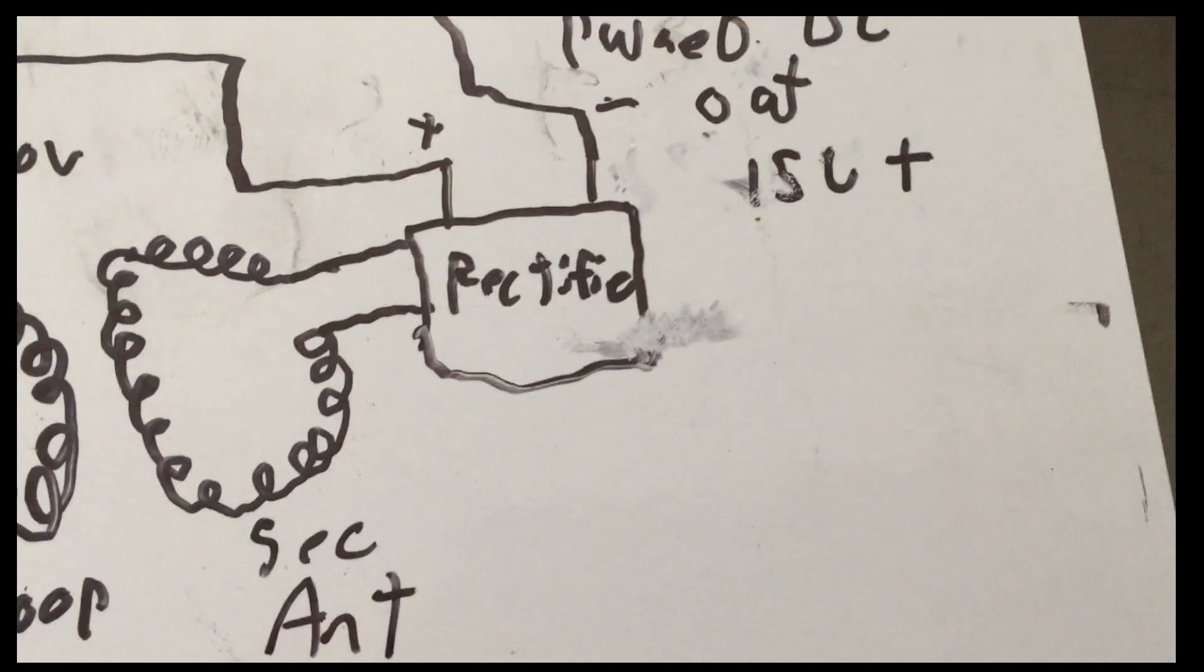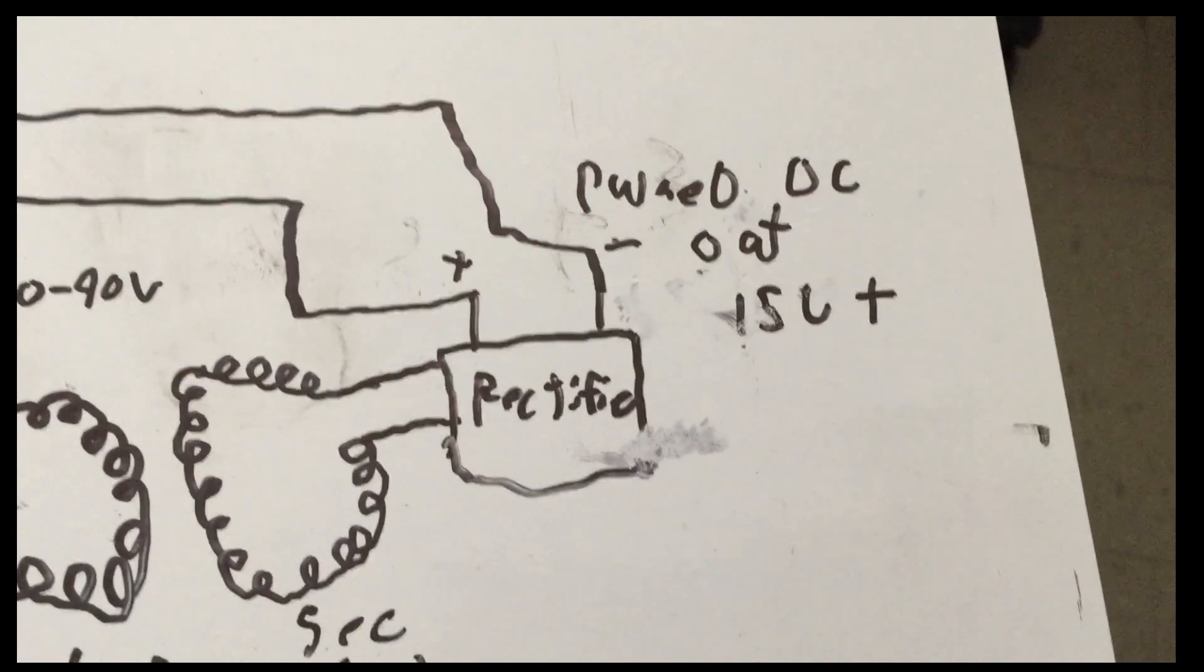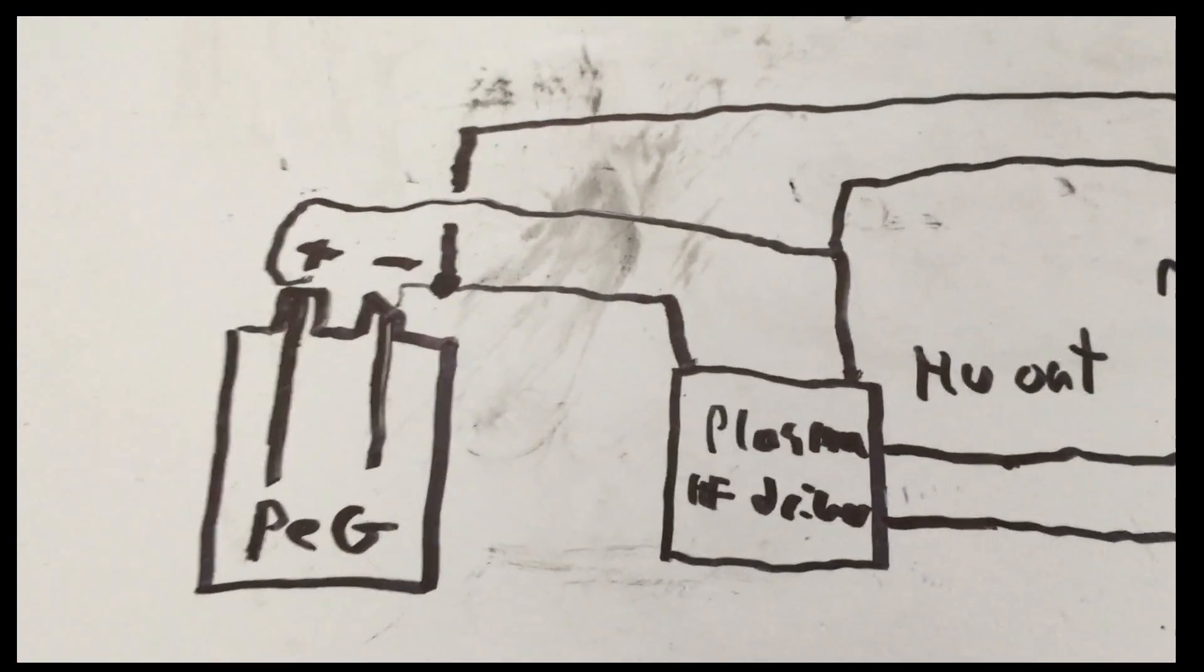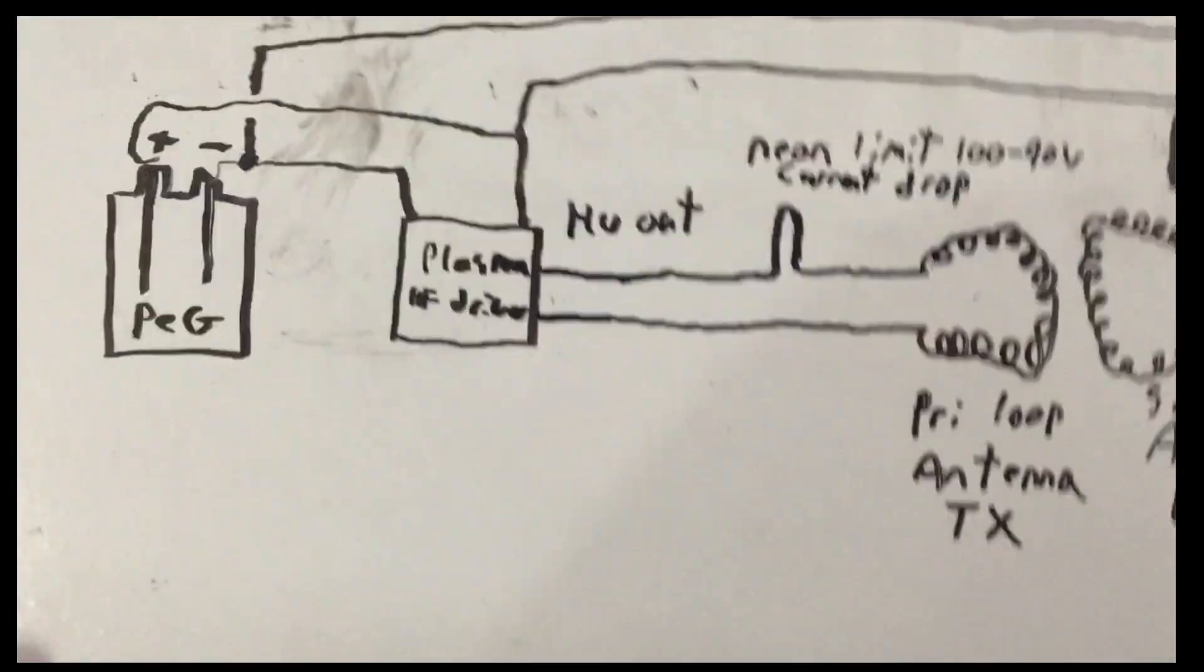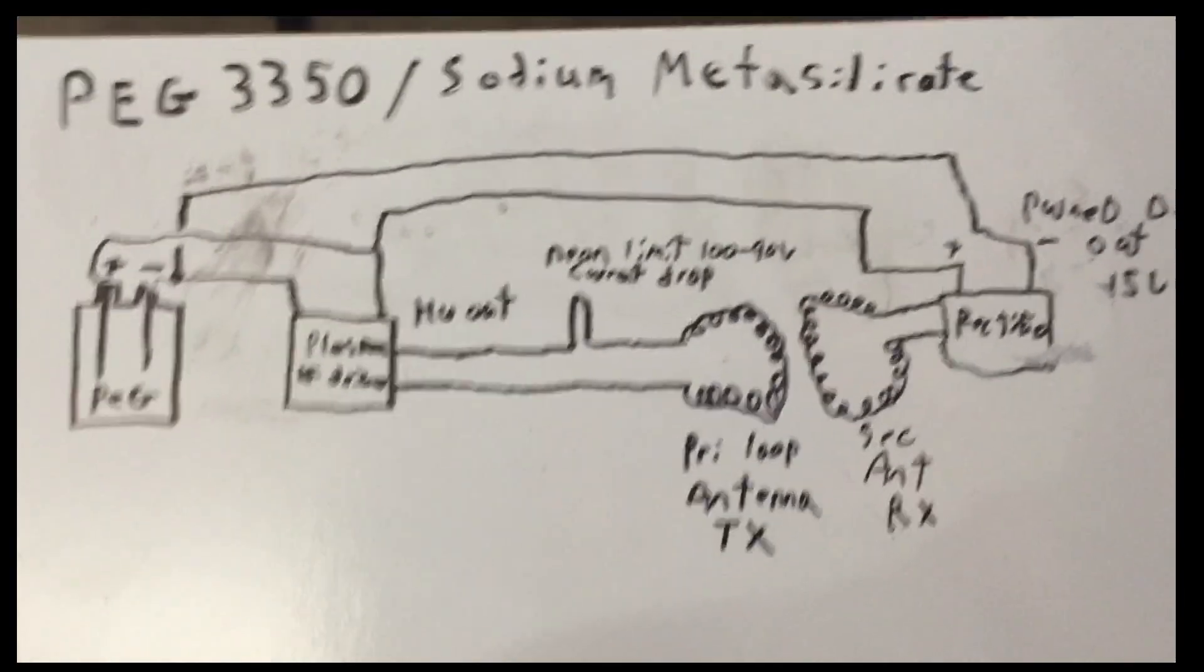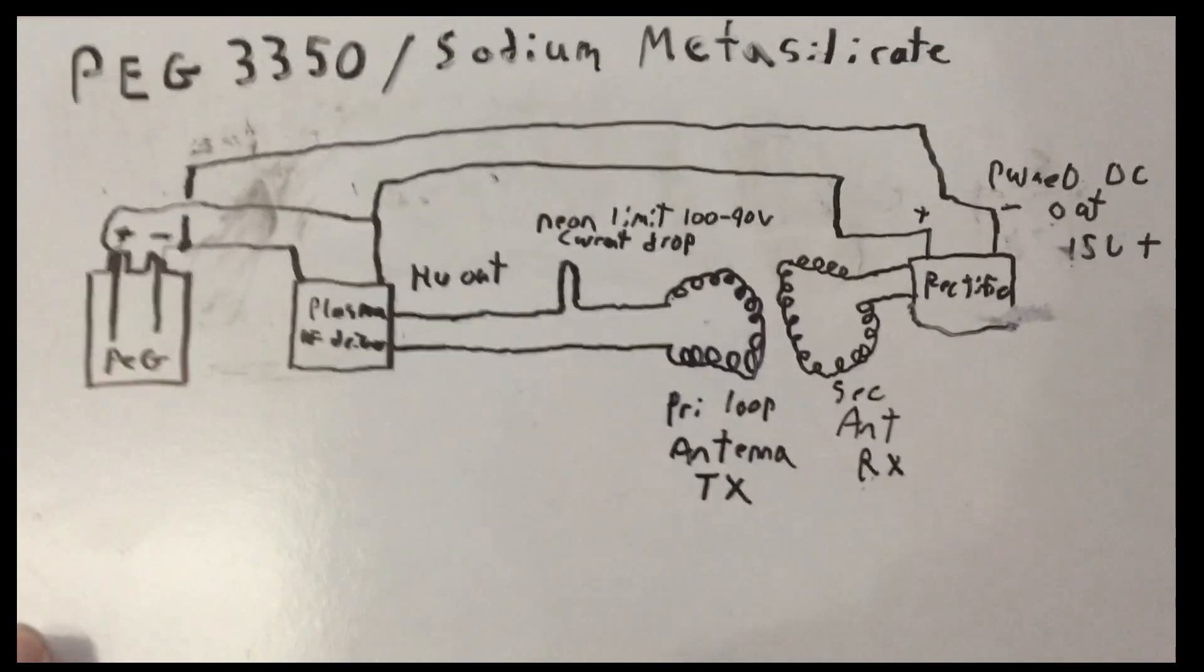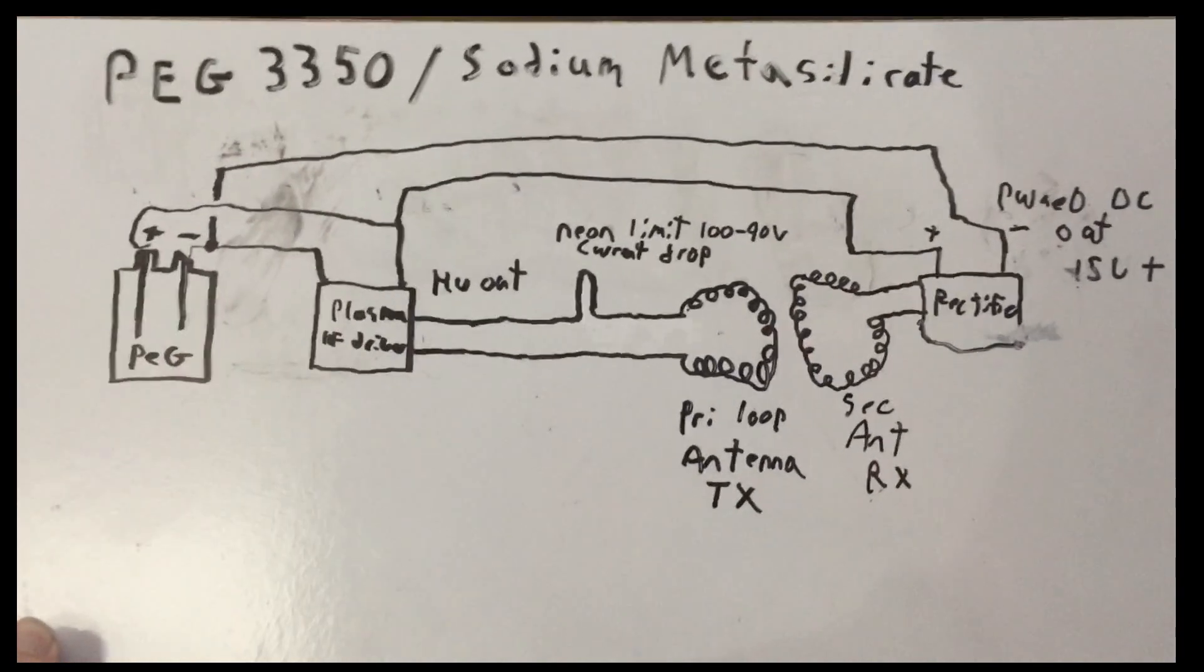On the secondary antenna, essentially, it's a rectifier giving us a pulse DC out. I measured it to being around 15 volts plus, which is looping back into the plus and minus of the PEG cell over here. So a truly self-looped setup which doesn't require a traditional power source. The PEG cell self-loops and charges itself like a capacitor, and that becomes the power source, and we initiate a feedback to enhance it.